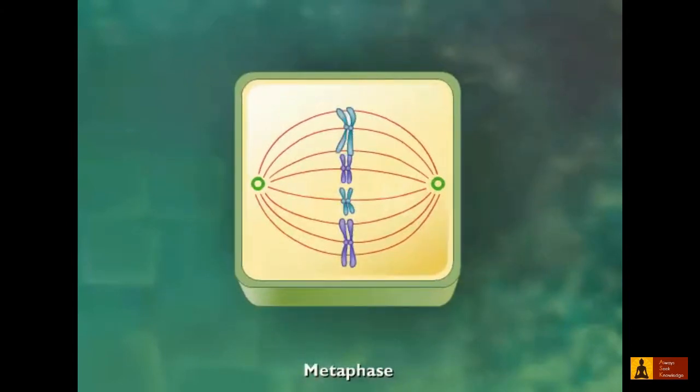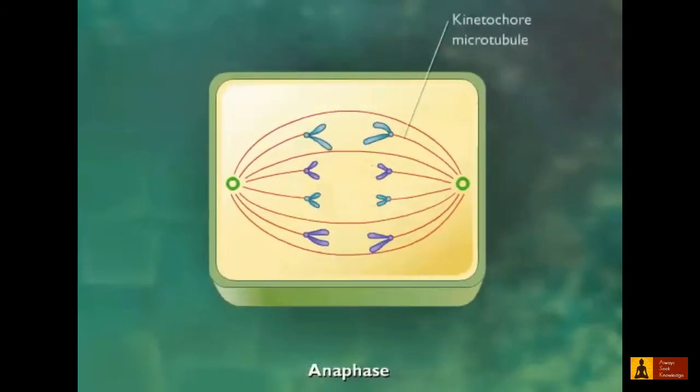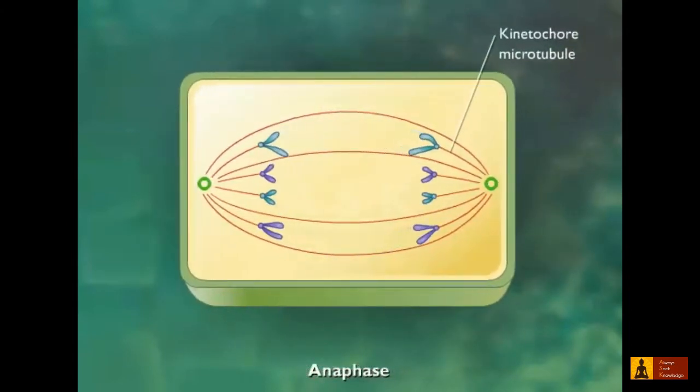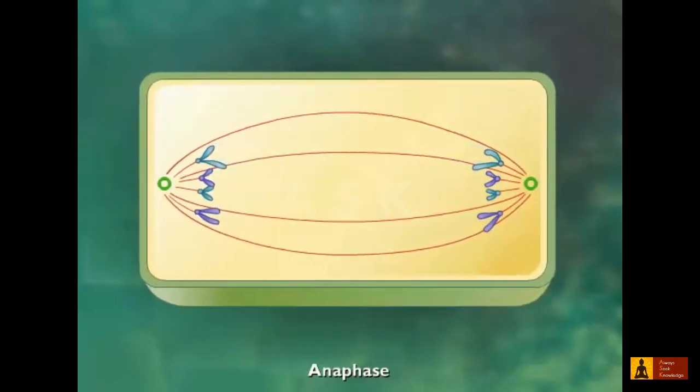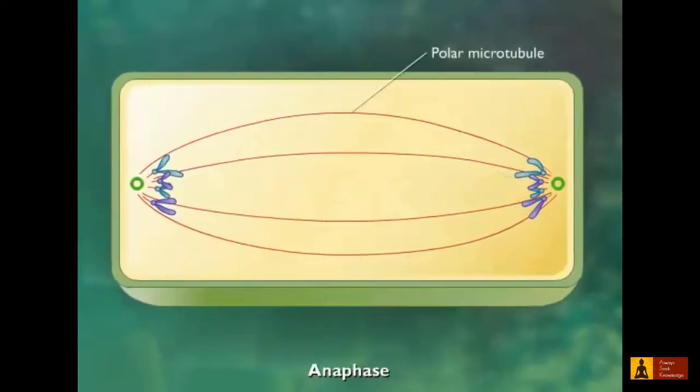During anaphase, the kinetochore microtubules shorten, separating the chromosomes to opposite poles, while the polar microtubules and the cell elongate.